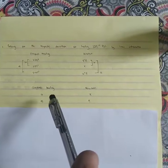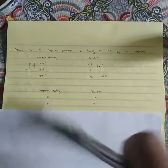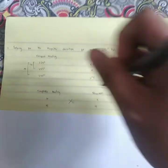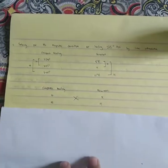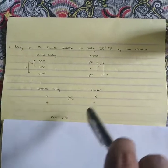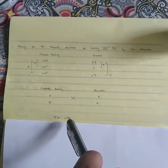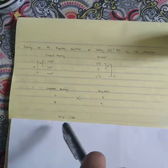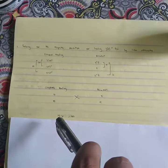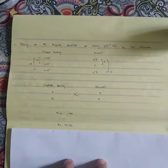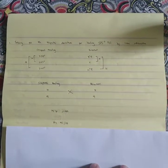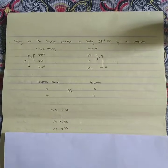Next we use cross multiplication. 15 times X equals 15X, and 10 times 4 equals 40. This is the outcome. We then transpose the 15, so X equals 40 over 15. The answer is 2.67.